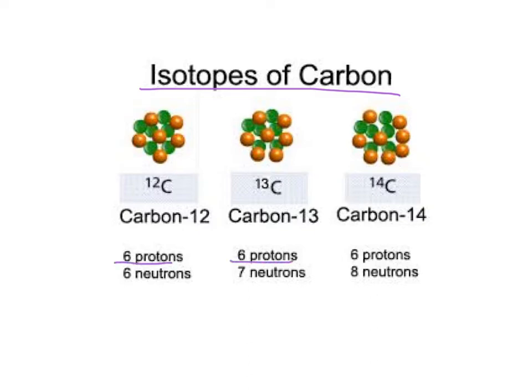Remember, protons tells you what element you are. So you can't change the number of protons unless you change the type of element. So they're all the same element. They have the same number of protons. They have six. The only thing that changes is the number of neutrons. If you notice, as you add one, that adds on to the mass.